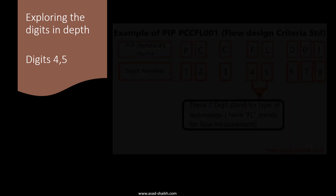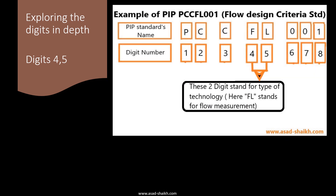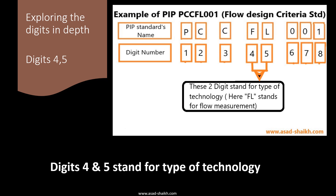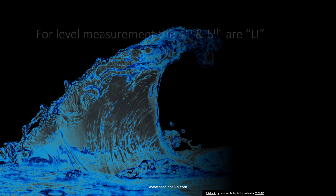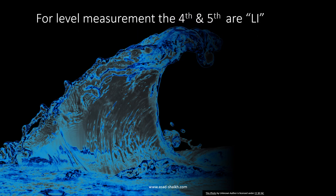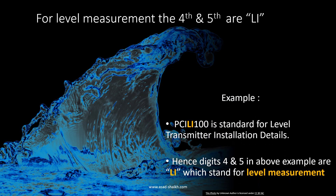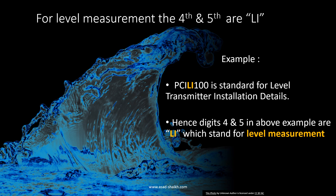Digits four and five are straightforward — they stand for the type of technology used. In our example, it was flow meter technology, so digits four and five are FL. For level measurement technology, they would be LI. Taking another example: PCILI — here PC is the instrumentation department, I means installation detail, and LI indicates it caters to level measurement technology.